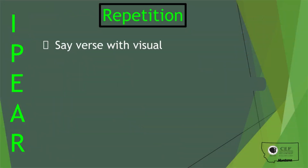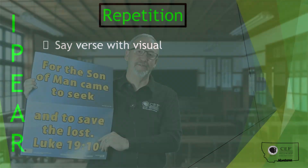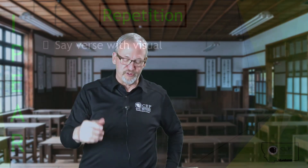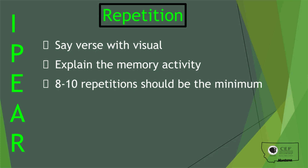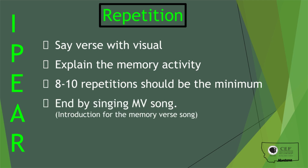Repetition is where memory verses get to be a lot of fun. Rather than repeating it 150 times, we have very unique ways of repeating the verse. We recommend repeating it at least eight to ten times so the kids actually know the verse when you're done. After going through those repetitions, end by singing the memory verse song — that's an extra way of reinforcing it, and the VBS curriculum includes a song for each memory verse.